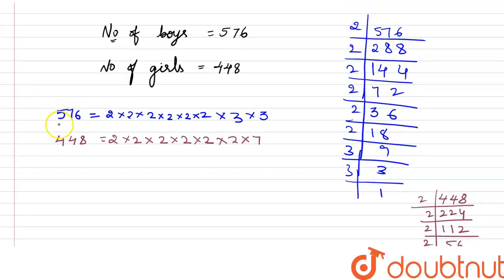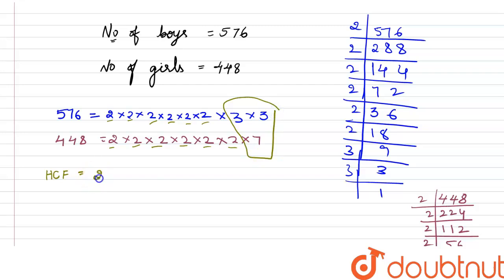Now what is the HCF of 576 and 448? HCF means Highest Common Factor. The common prime factors are six 2s, so HCF = 2 × 2 × 2 × 2 × 2 × 2 = 64. The HCF is 64.